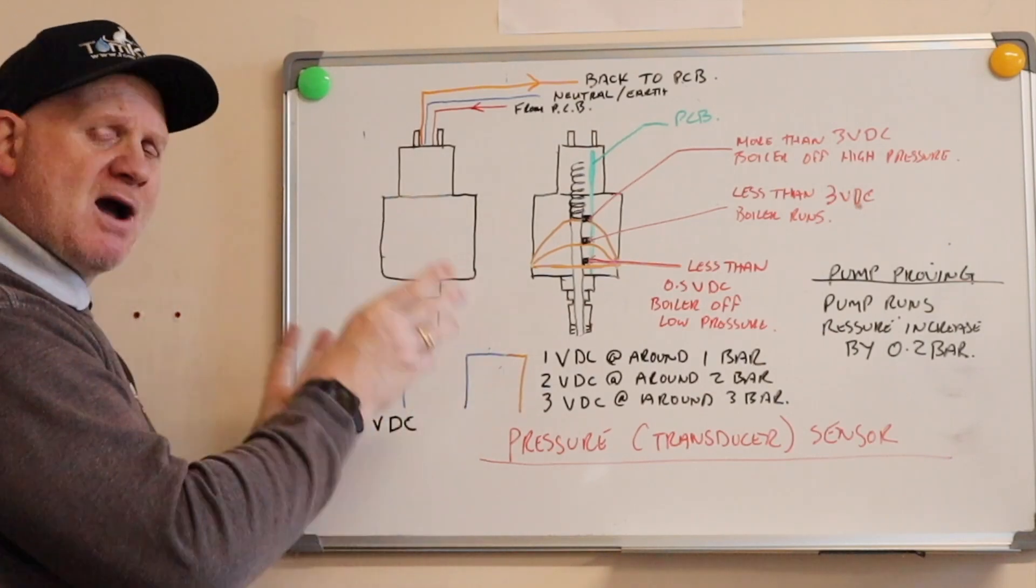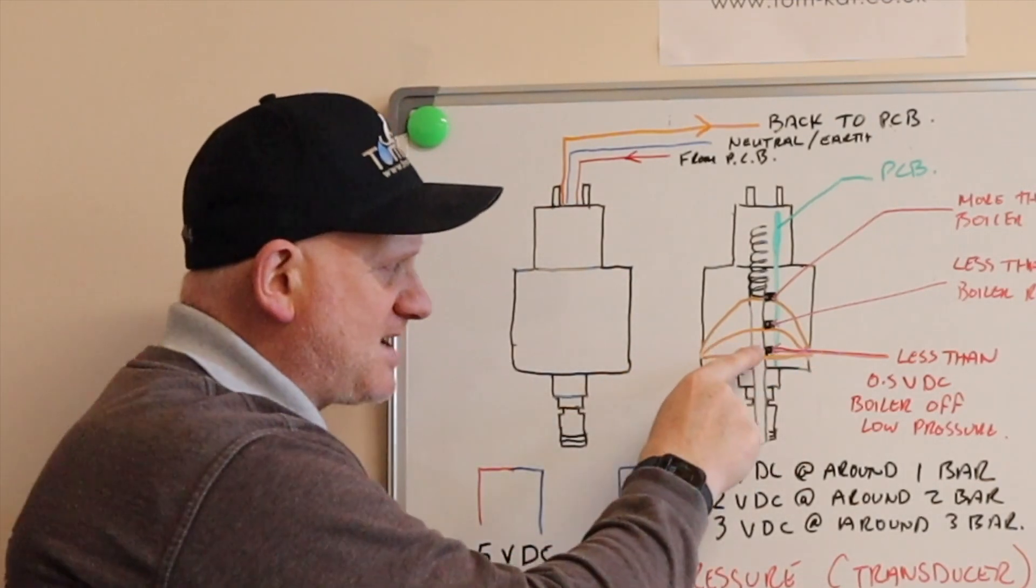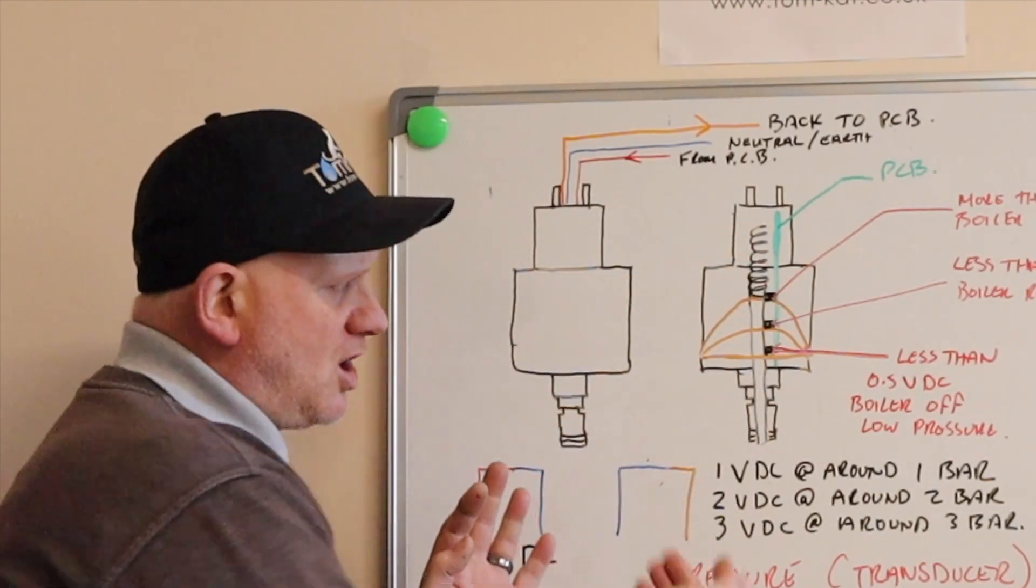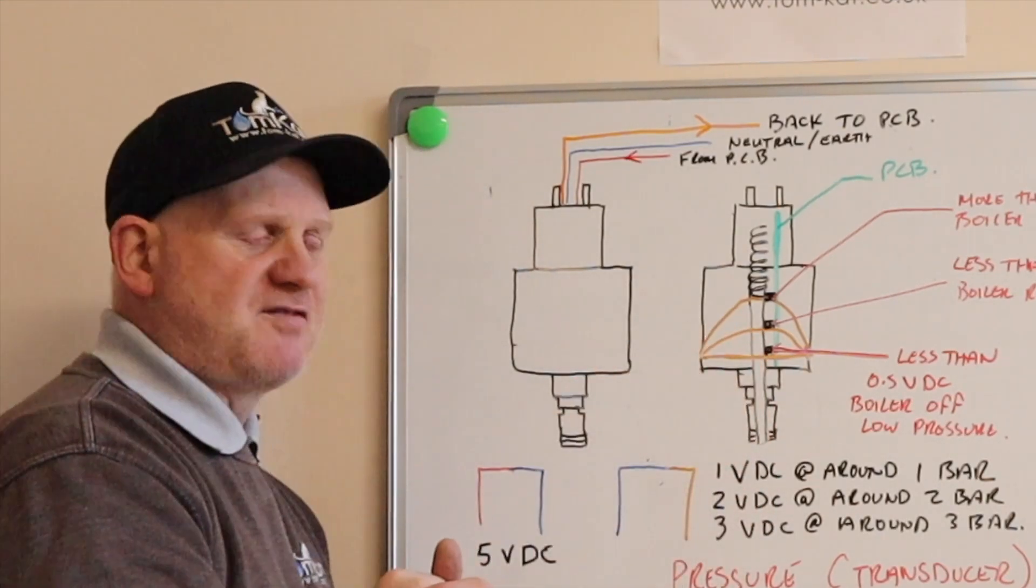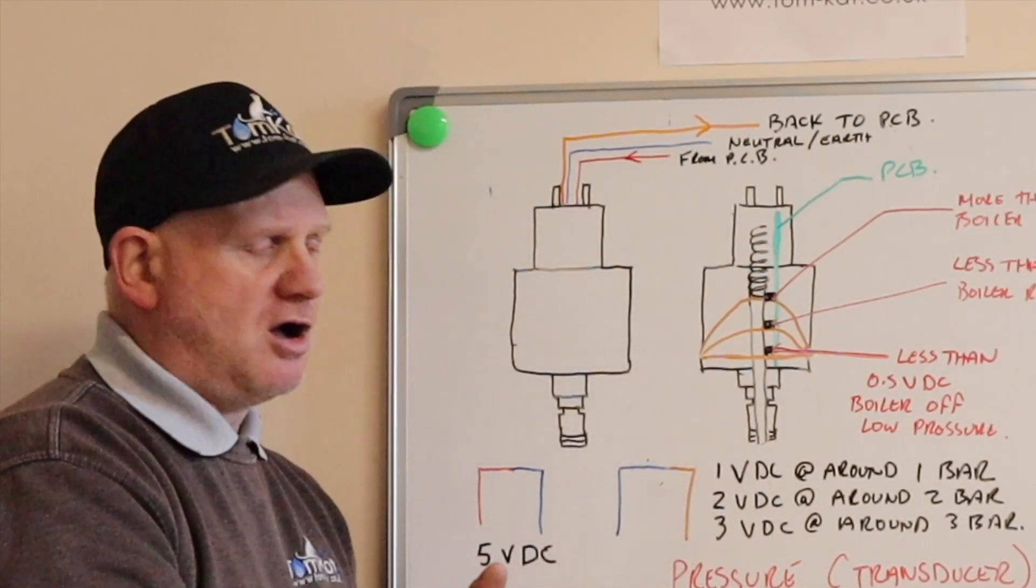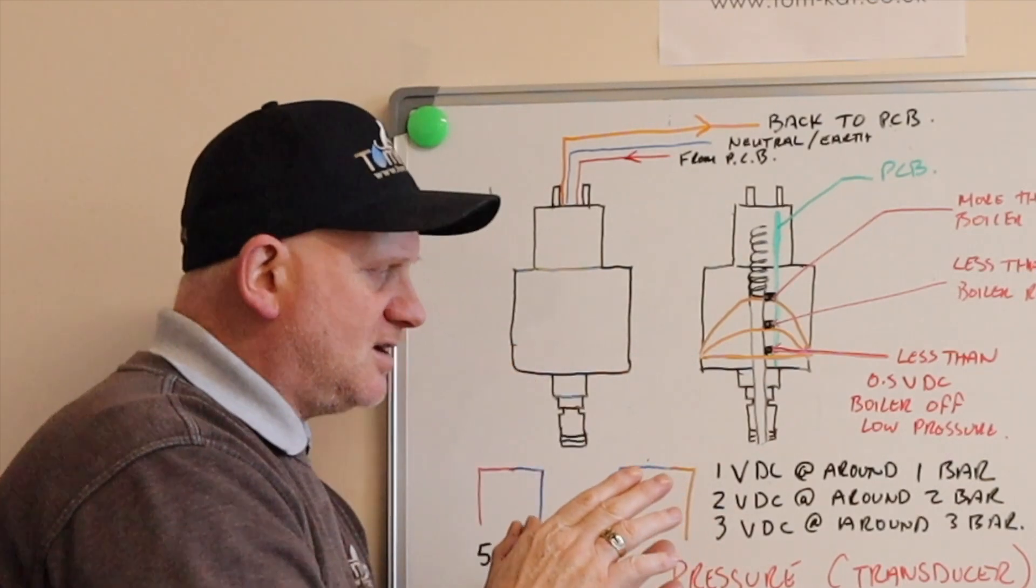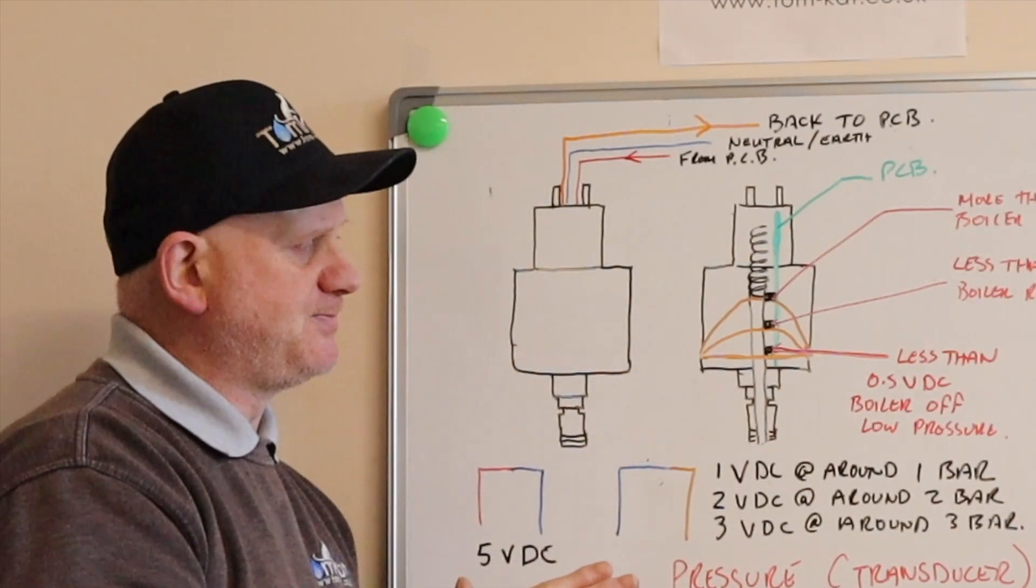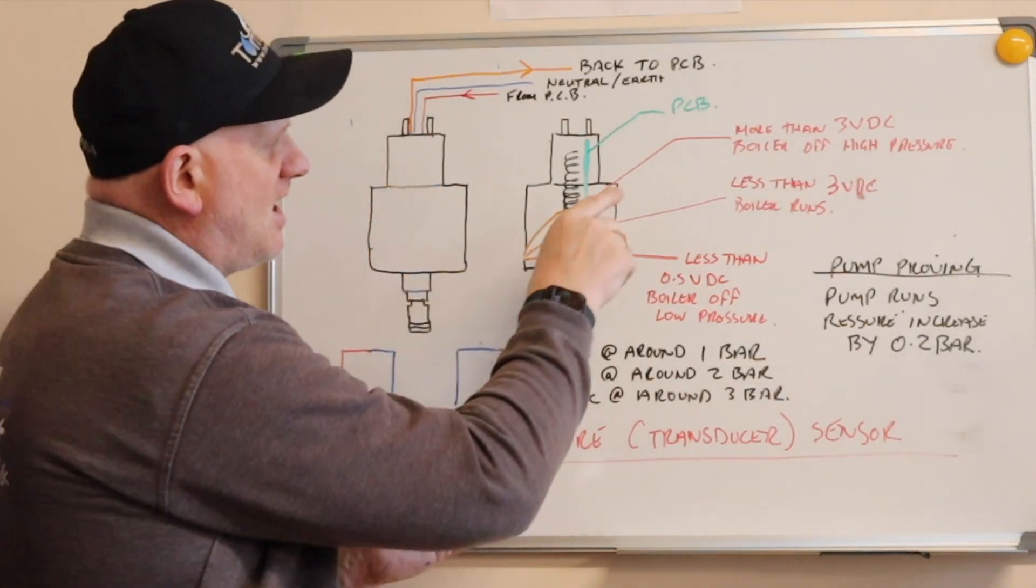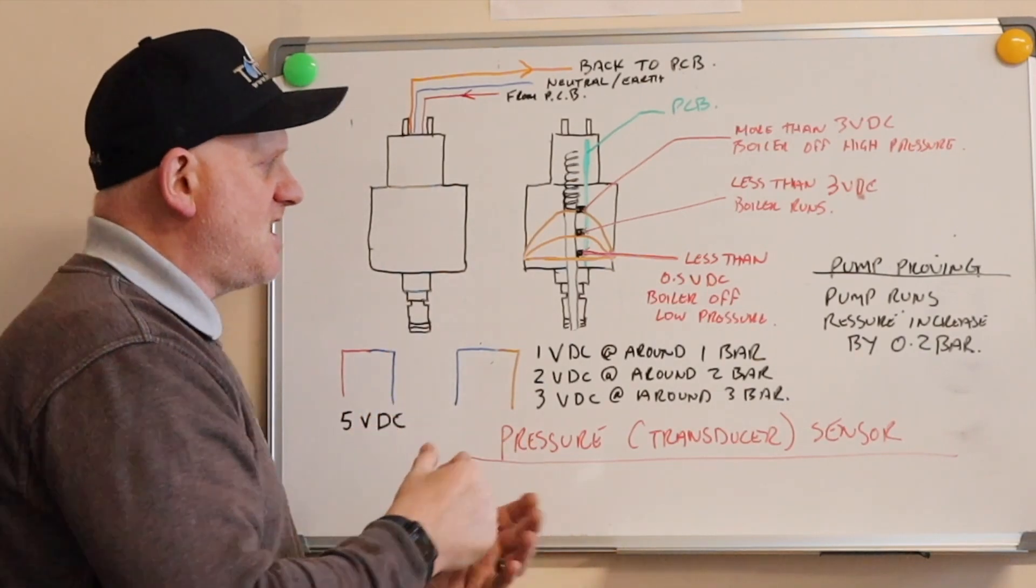So how does it work? If we did a cut-through section, we'll see there is a little diaphragm with a magnet attached to it, there is a PCB, and then a tiny little spring. As the water comes through the hole in the center, it pushes the diaphragm up. So if there's no water, the diaphragm is level, the magnet is down at the bottom of the little PCB inside it, and it's less than 0.5 volts. The boiler knows there's no water in there. As you put the water in there, the magnet will rise up, move up the PCB. If we've got less than 3 bar but more than 0.5 bar or volts DC, then the boiler will run normally.